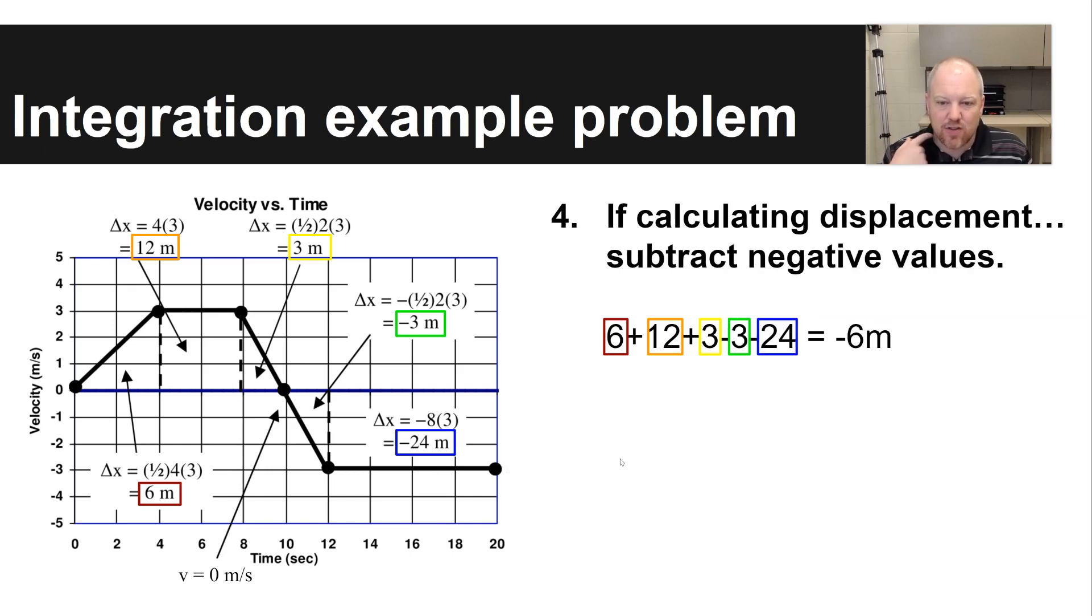Calculating displacement is just a little bit different. You'll add all the values that are above the zero line, but you're going to subtract the values that are below the negative line. Because, again, displacement is your total change in position from your starting point to your ending point. Again, you're moving forward if you have a velocity above zero, but you're moving backwards, heading back towards where you started if you have a negative velocity.